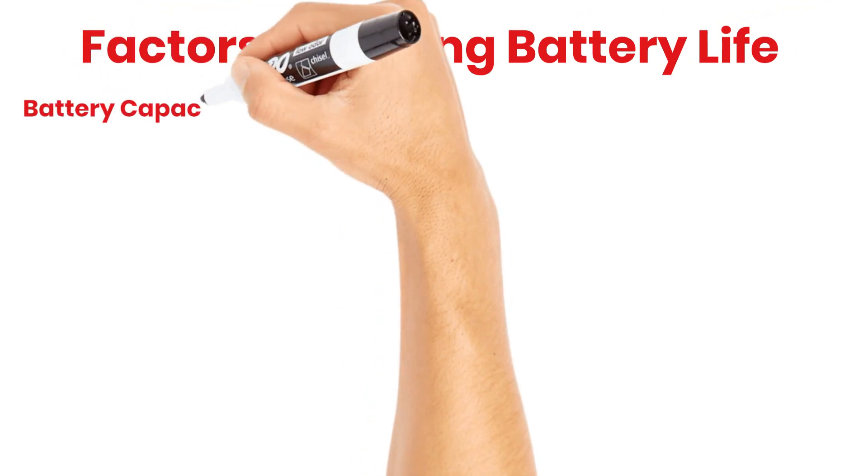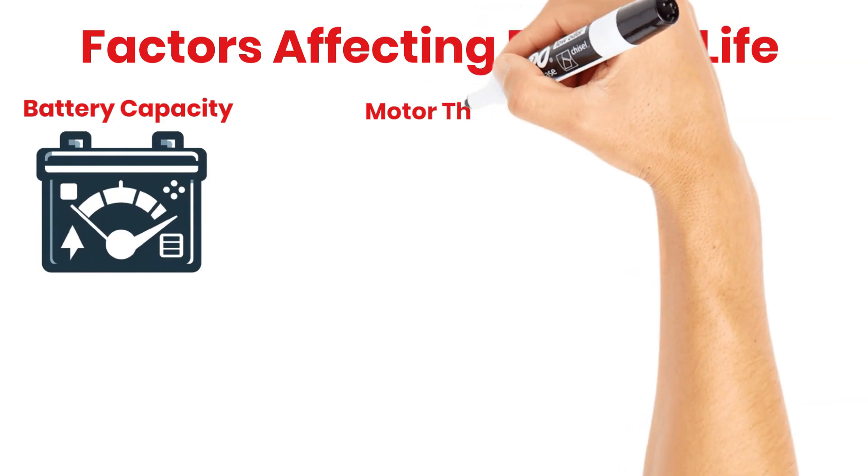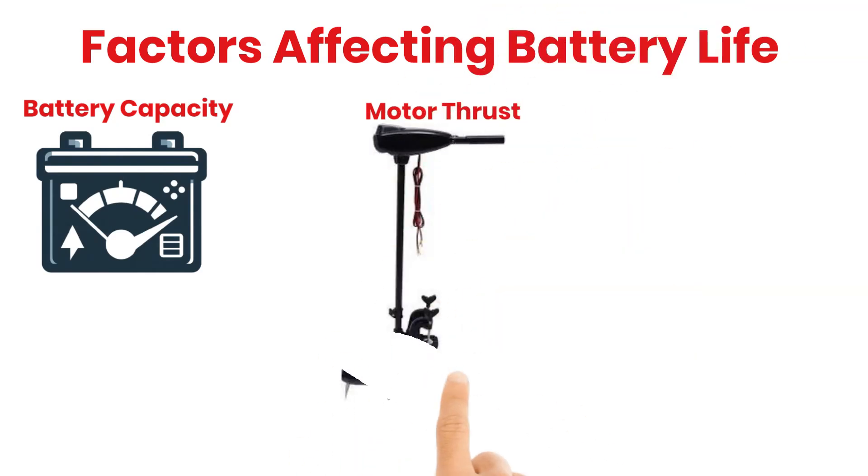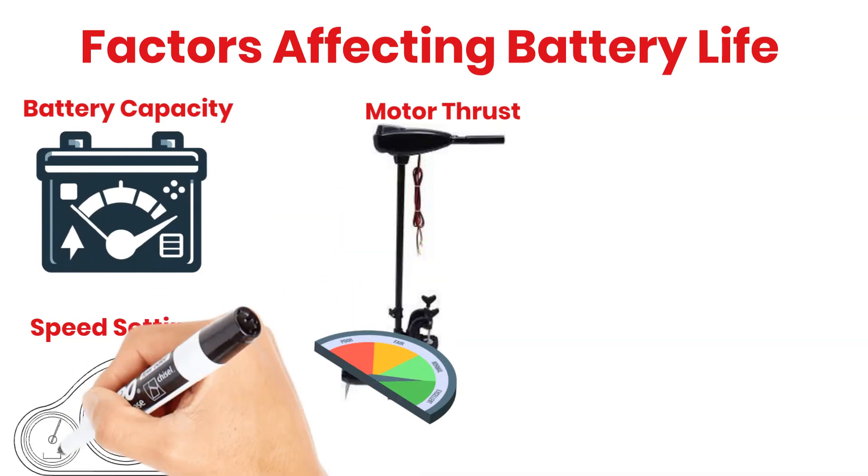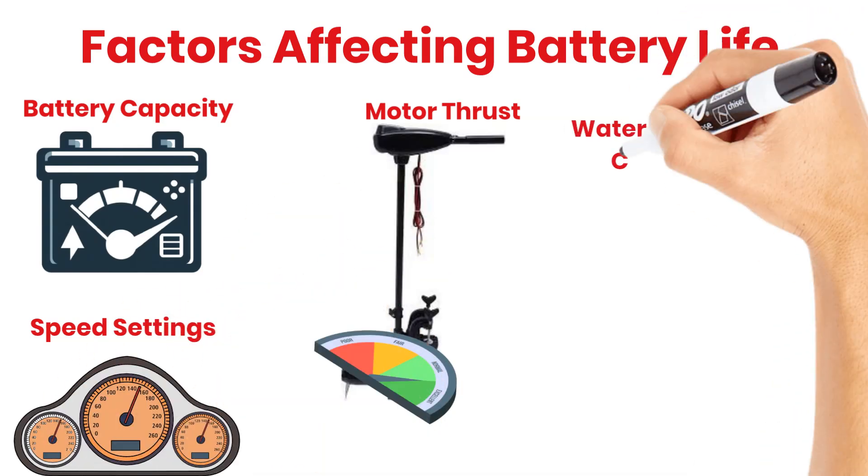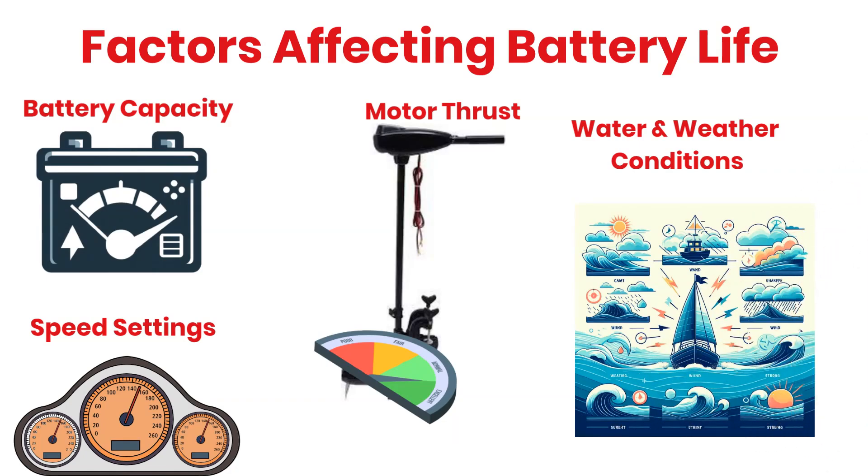Several factors determine how long a 12-volt battery will last with a trolling motor. Let's look at the most important ones. Battery capacity: more capacity means longer run time. Motor thrust: higher thrust uses more energy, draining the battery faster. Speed settings: lower speeds conserve battery power. Water and weather conditions: wind, current, and temperature can impact power usage.